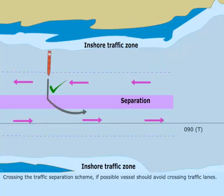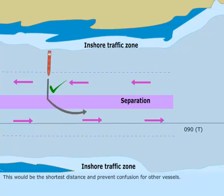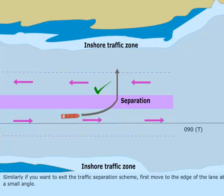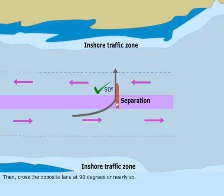Crossing the traffic separation scheme: if possible, the vessel should avoid crossing traffic lanes. If it cannot avoid, then cross the traffic lane with a heading which is about 90 degrees to the traffic separation scheme. This would be the shortest distance and prevent confusion for other vessels. Similarly, if you want to exit the traffic separation scheme, first move to the edge of the lane at a small angle, then cross the opposite lane at 90 degrees or nearly so.